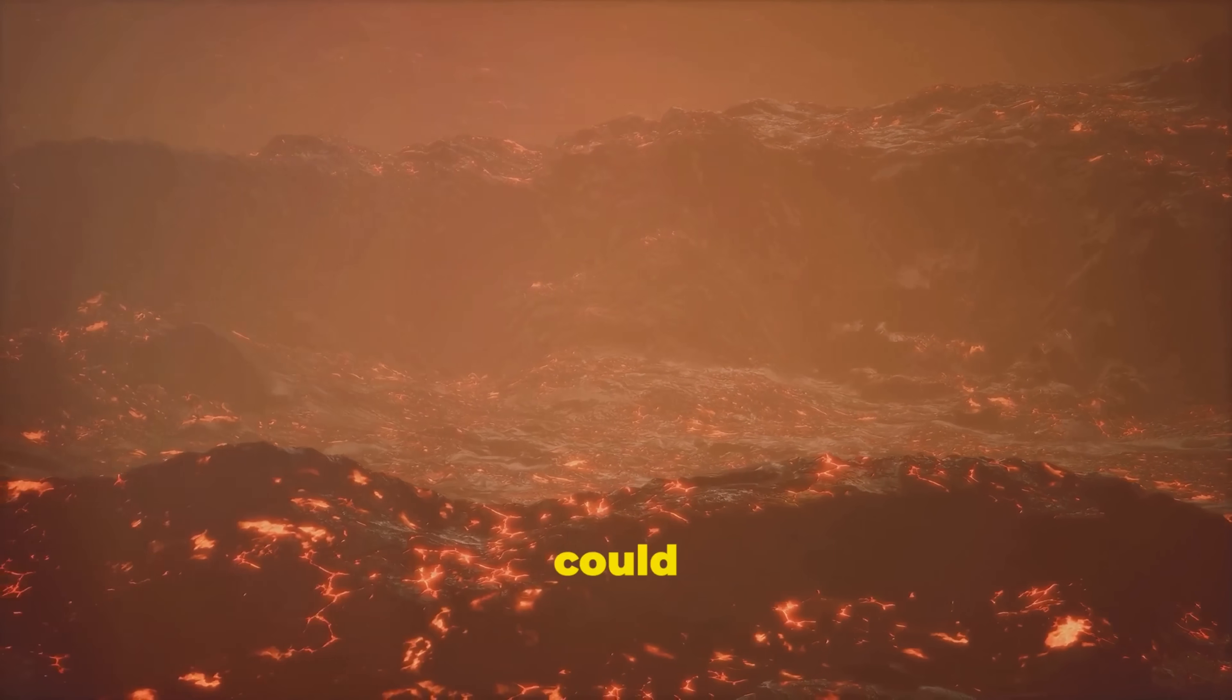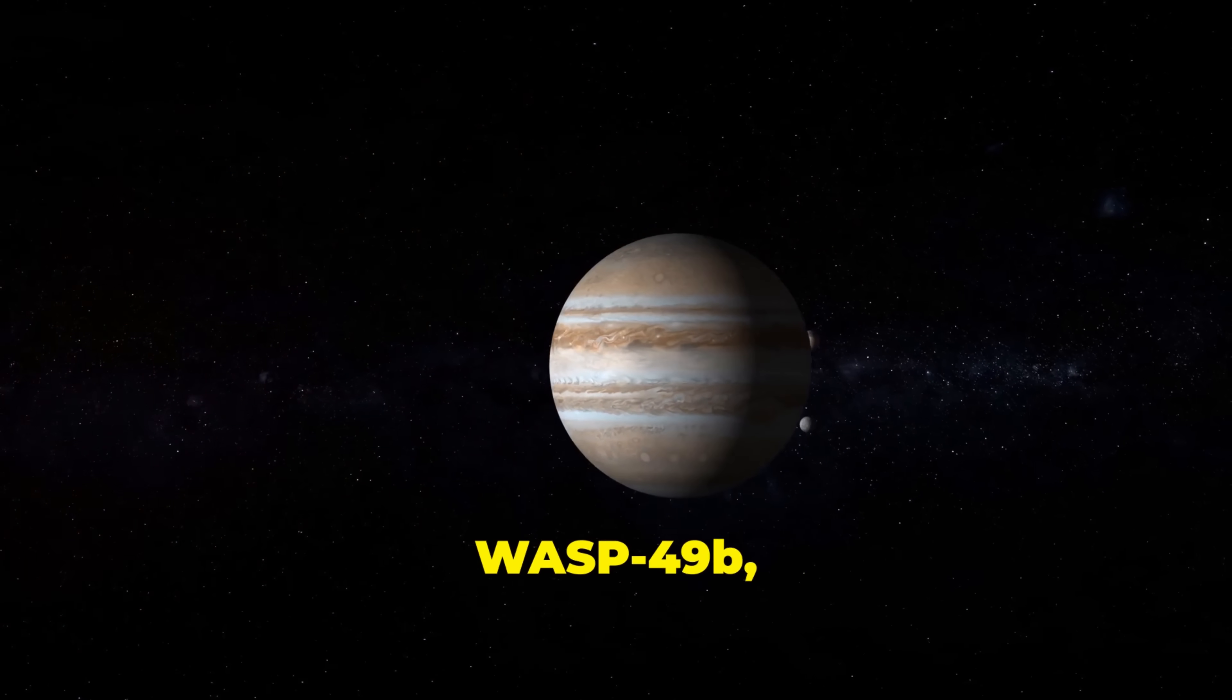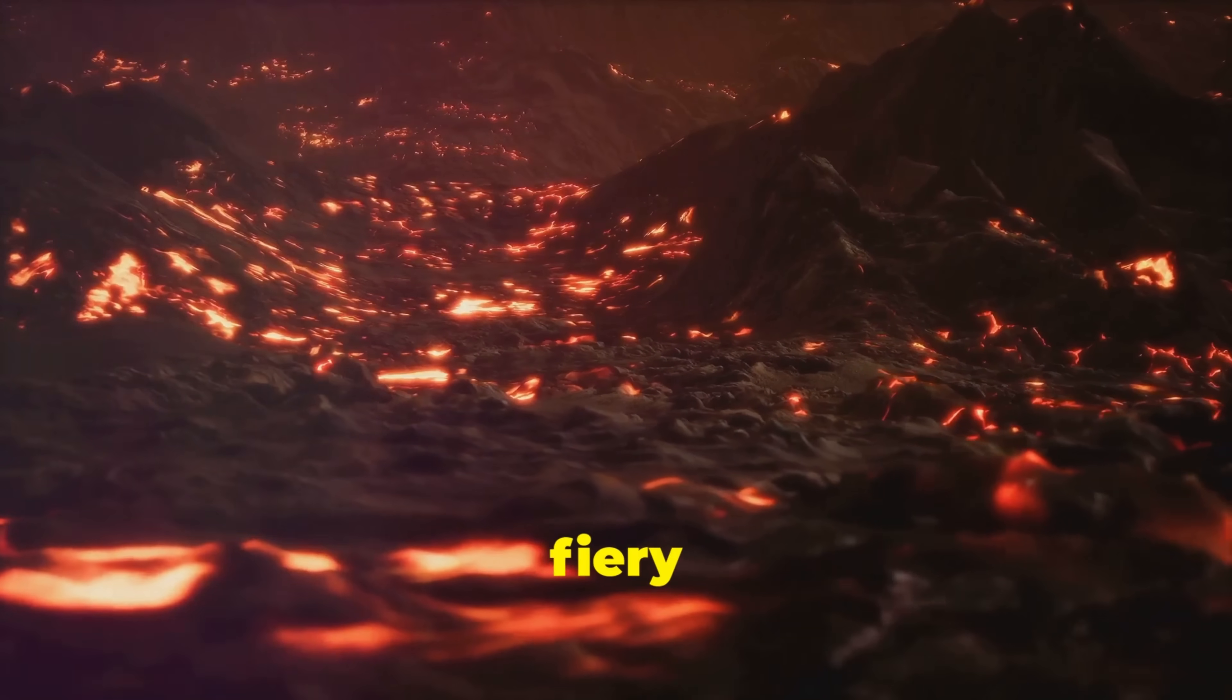Spotted, an exomoon that could give Dante's Inferno a run for its money. Orbiting the Jupiter-sized planet WASP-49b, this exomoon is a volcanic hellscape comparable to Jupiter's own fiery moon IO.